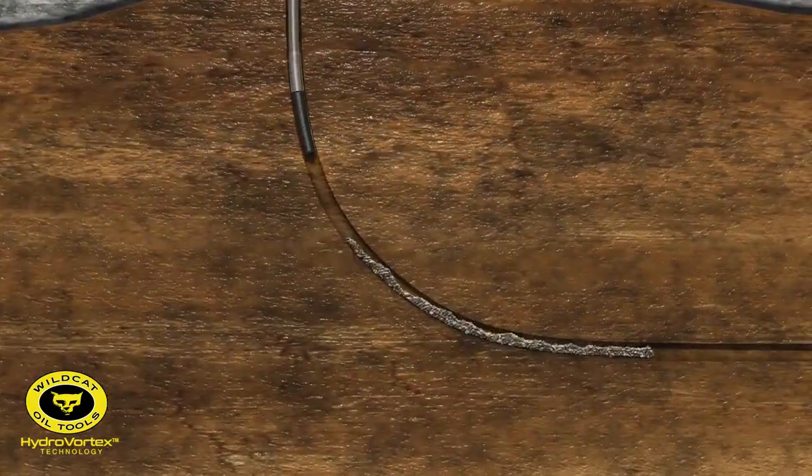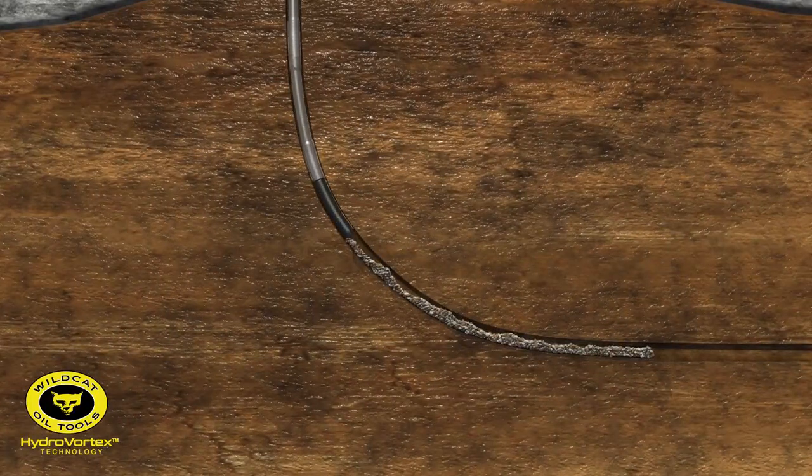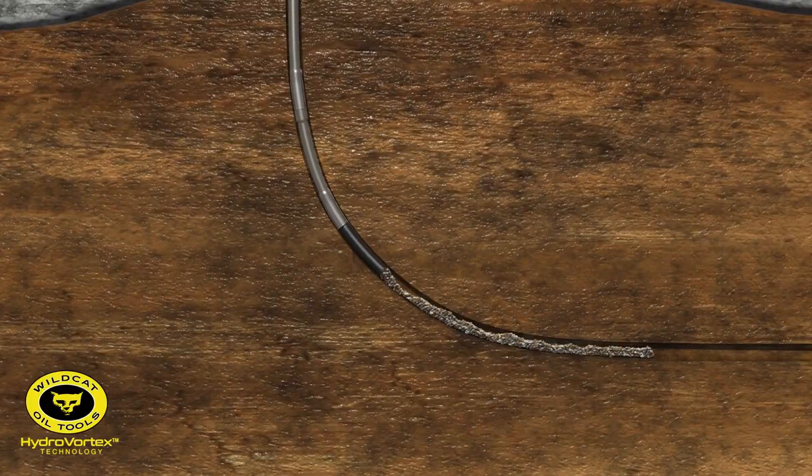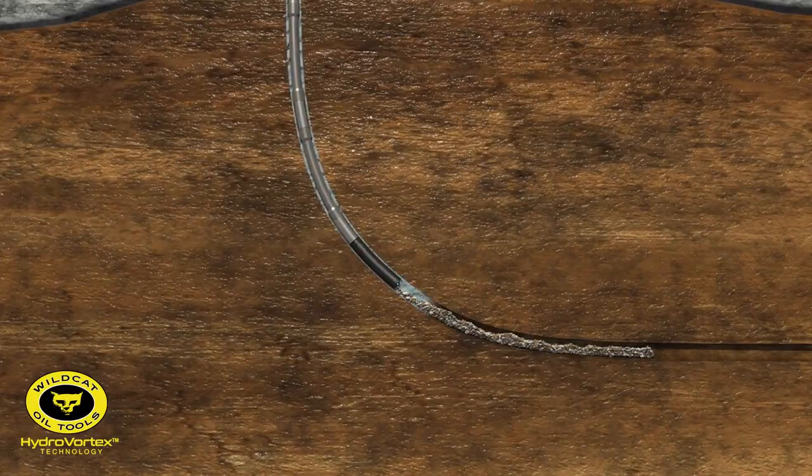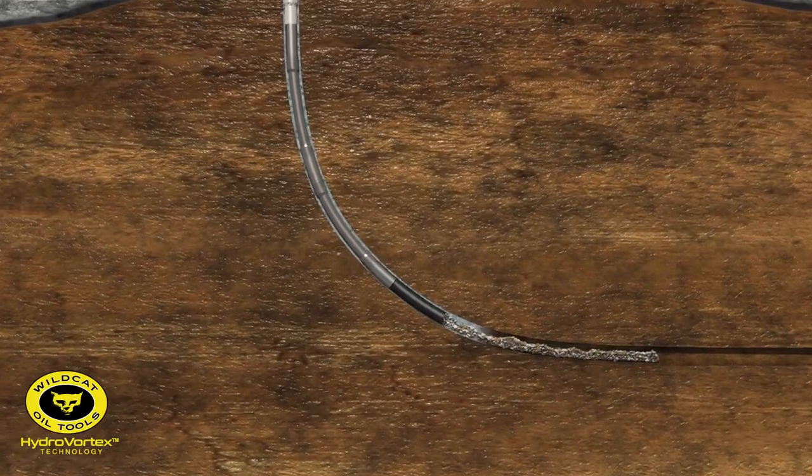The BHA is run into the wellbore and continues down the hole until debris obstructing the wellbore is encountered. Once the BHA stops, rotation starts, the pumps are turned on, and the HydroVortex begins vacuuming debris.